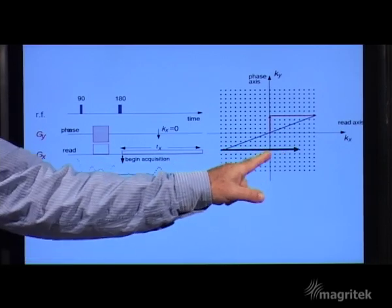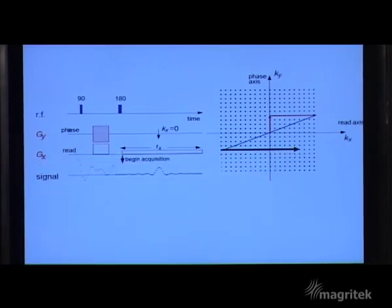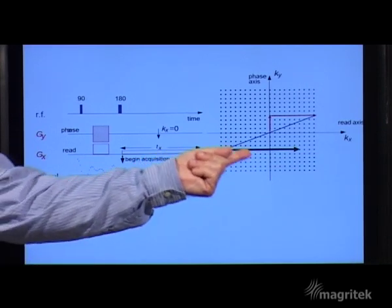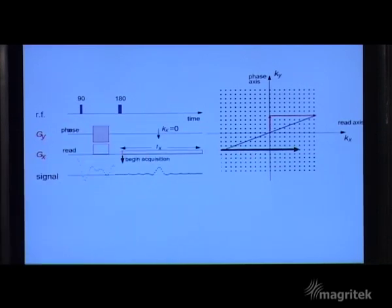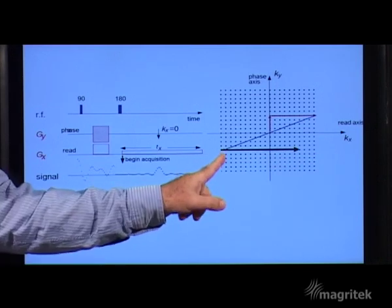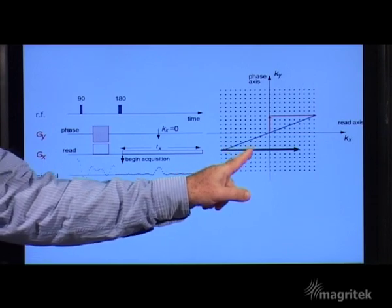And at each individual point along that line we acquire a signal. And we lay it down in the computer in our matrix for the signal at that particular point in k-space.